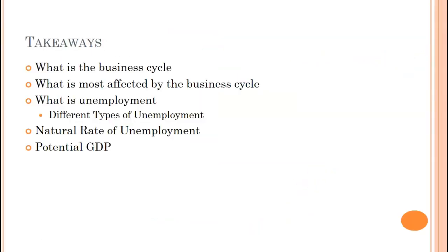Today we talked about the business cycle, who is affected, durable versus non-durable goods, the different types of unemployment, the natural rate of unemployment, potential GDP, and the GDP gap. The last two are very big long-standing conversations, so definitely understand those. If you have questions, ask your teacher. Until next time, bye.